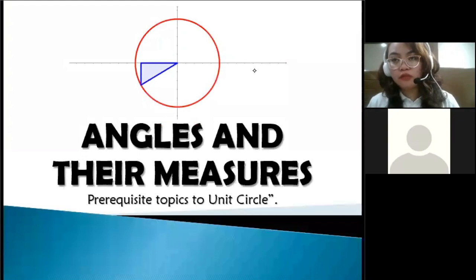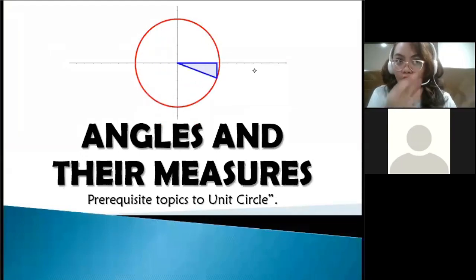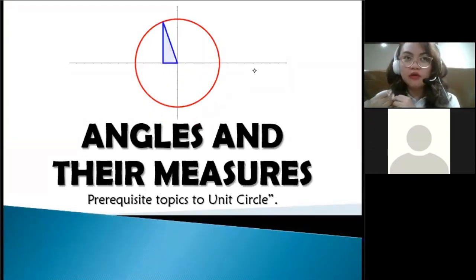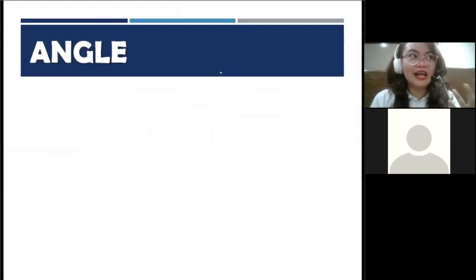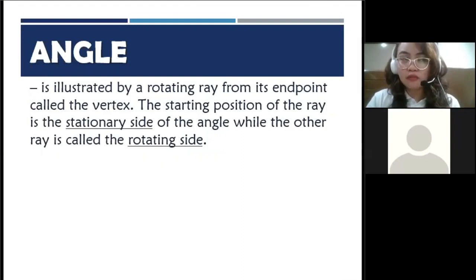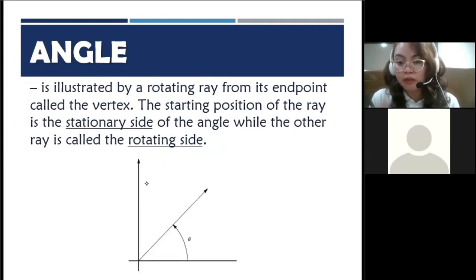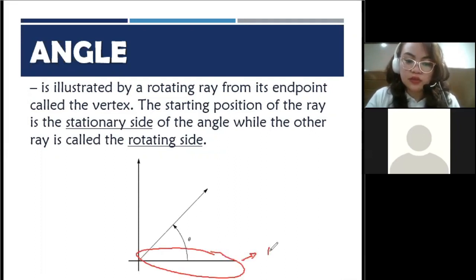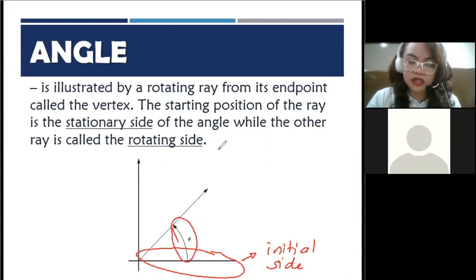Alright, so now let's talk about the prerequisite topics to unit circle. Before we actually go to the unit circle, you should have some skills first. So let's first talk about angles. Back in your junior high, when you talk about angles, you define it as the two rays with a common point called the vertex, right? That's how you define an angle. But here in trigonometry, in senior high STEM, in calculus, an angle is illustrated by a rotating ray from its endpoint called the vertex. So when we talk about the definition of an angle here in trigonometry, we are talking about a certain movement. It is a ray that moved from the starting position called the stationary side. Excuse me. So this is your stationary side, also called the initial side.